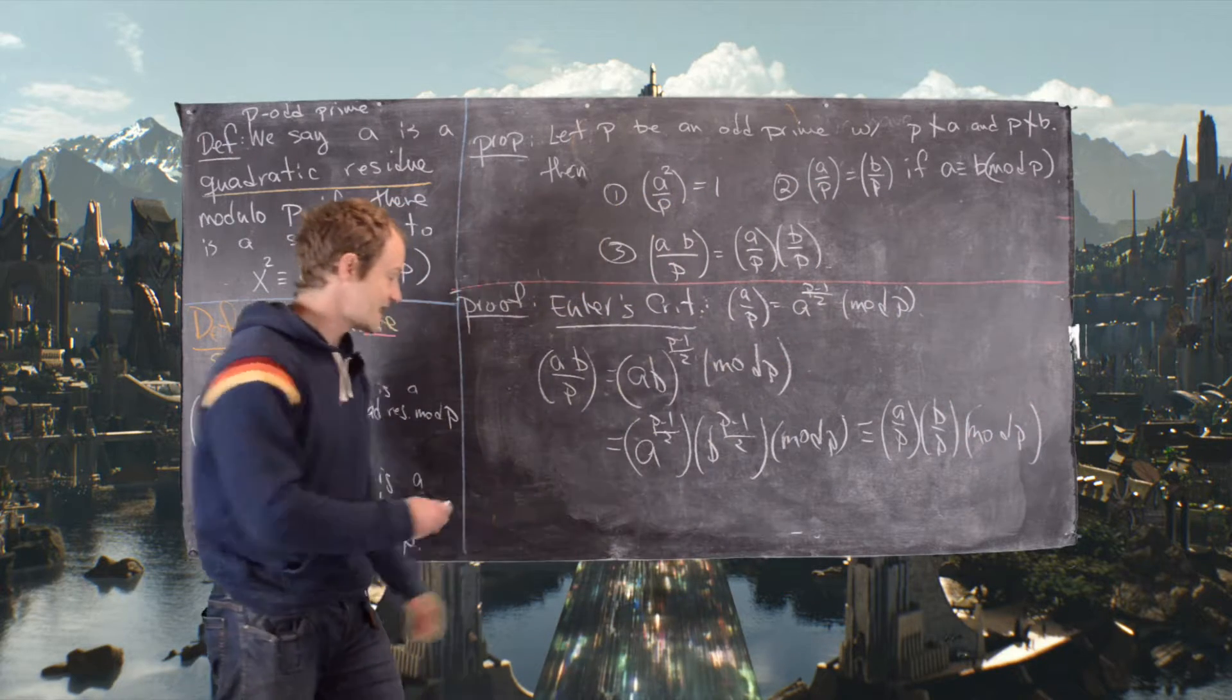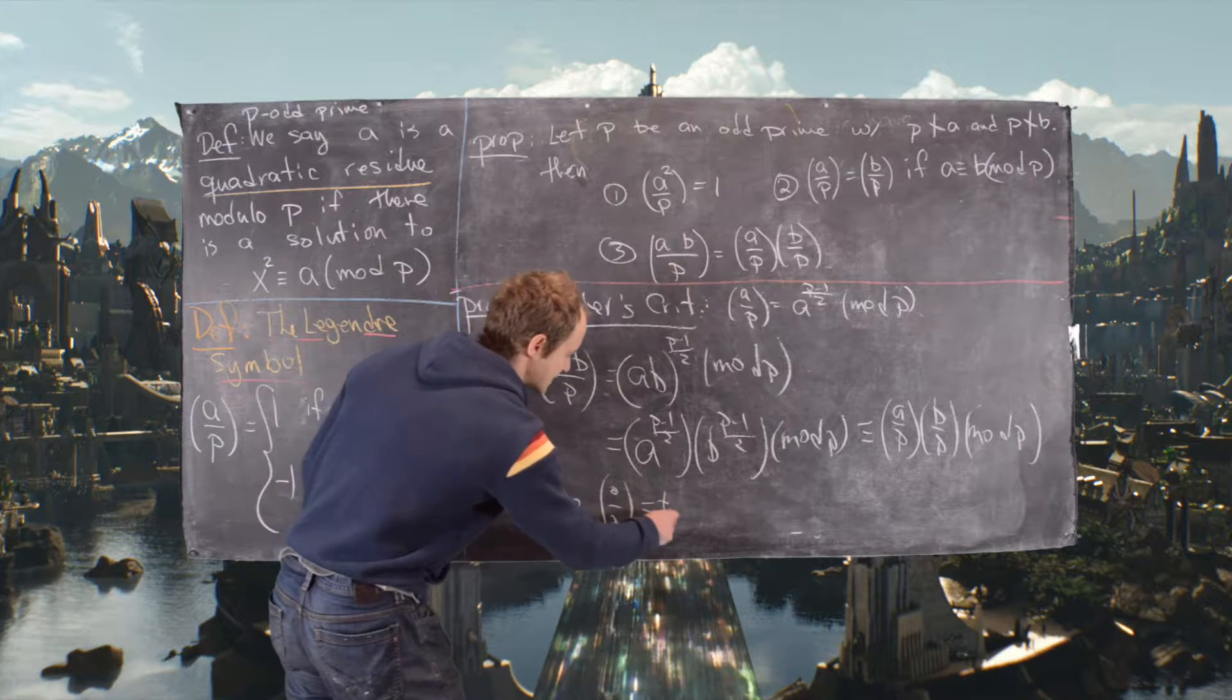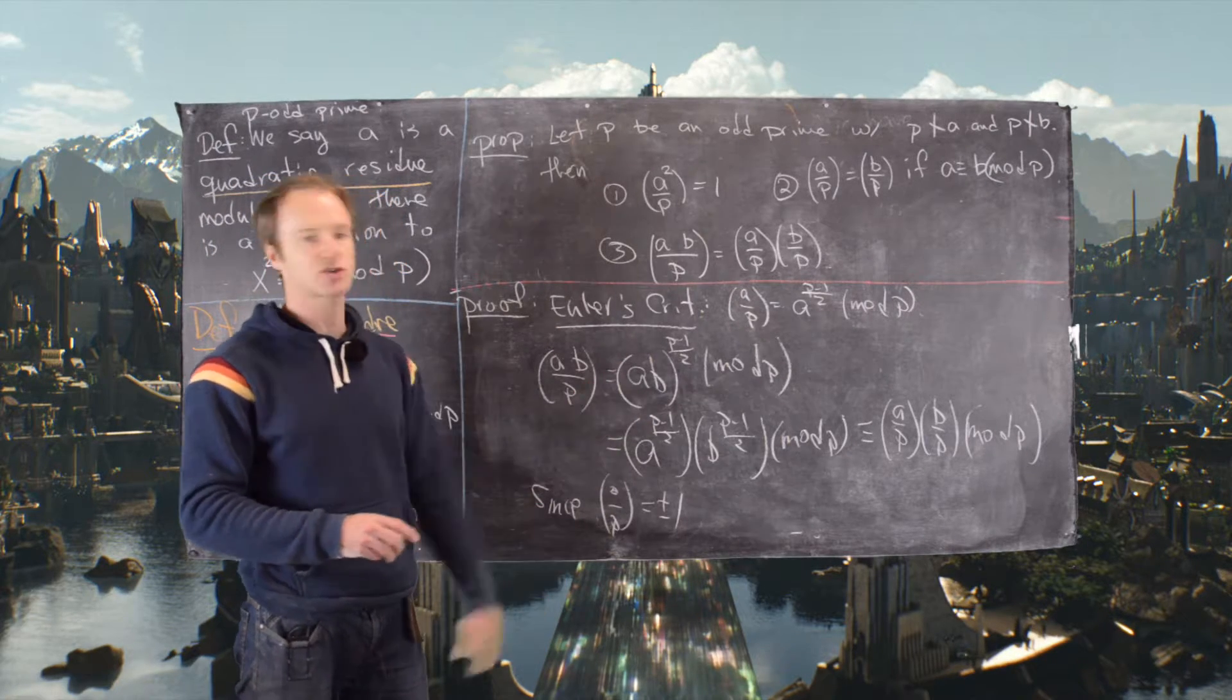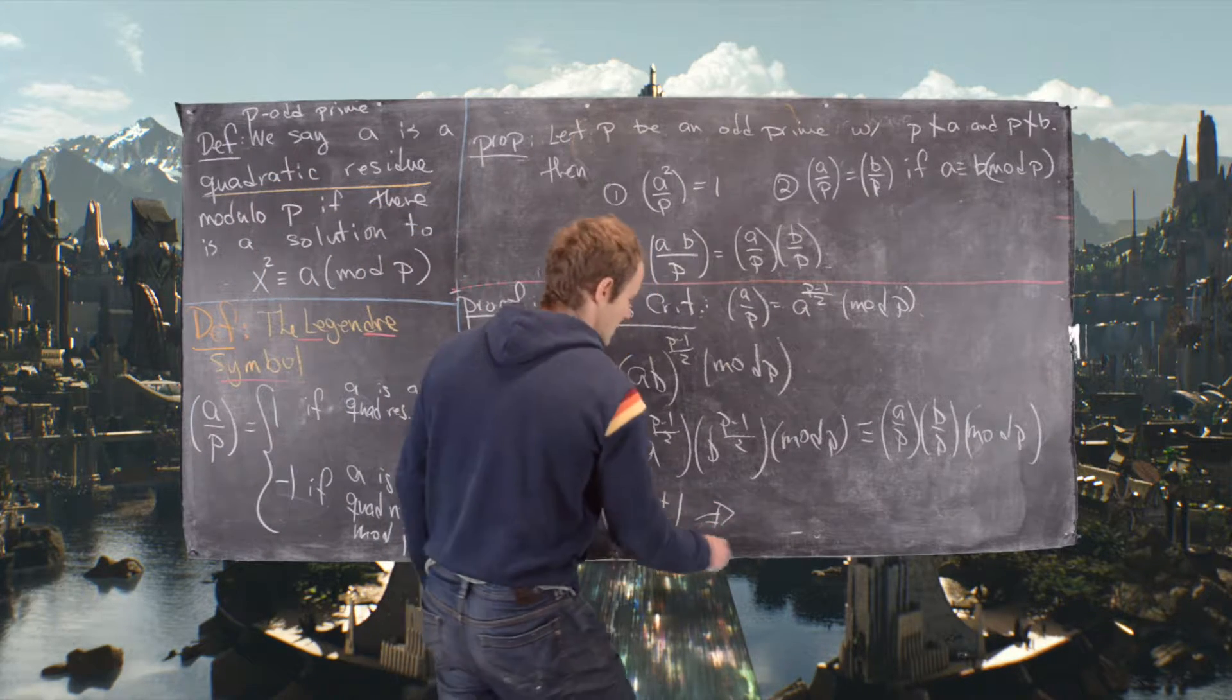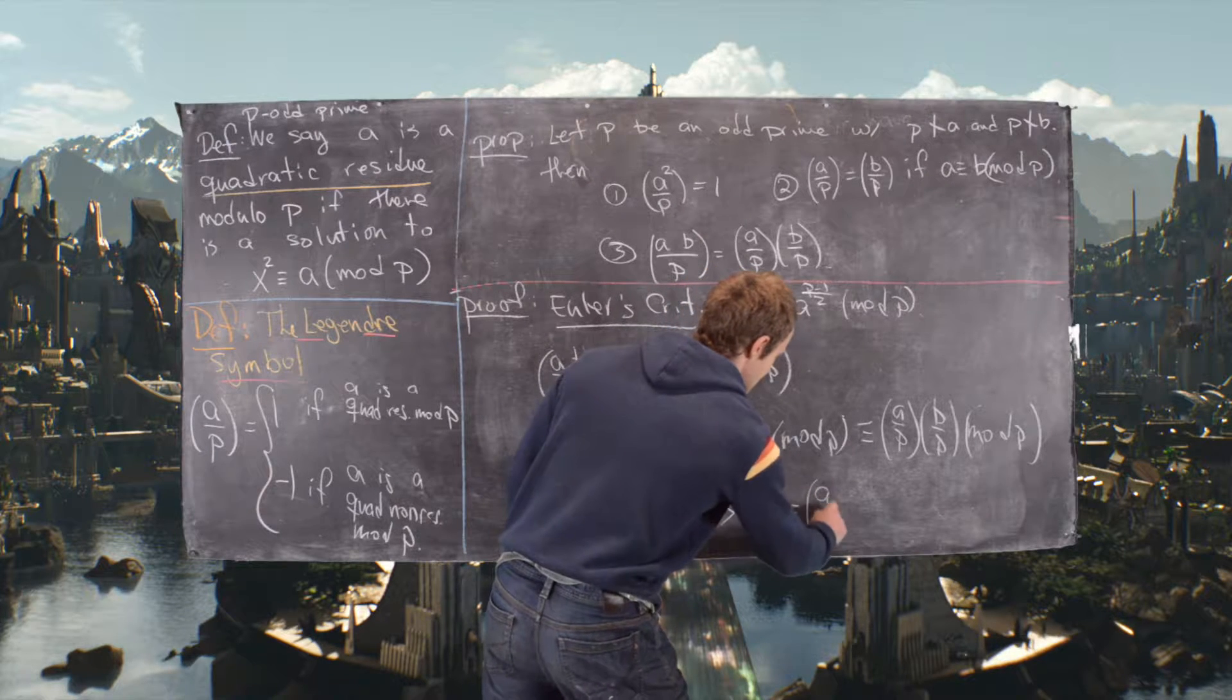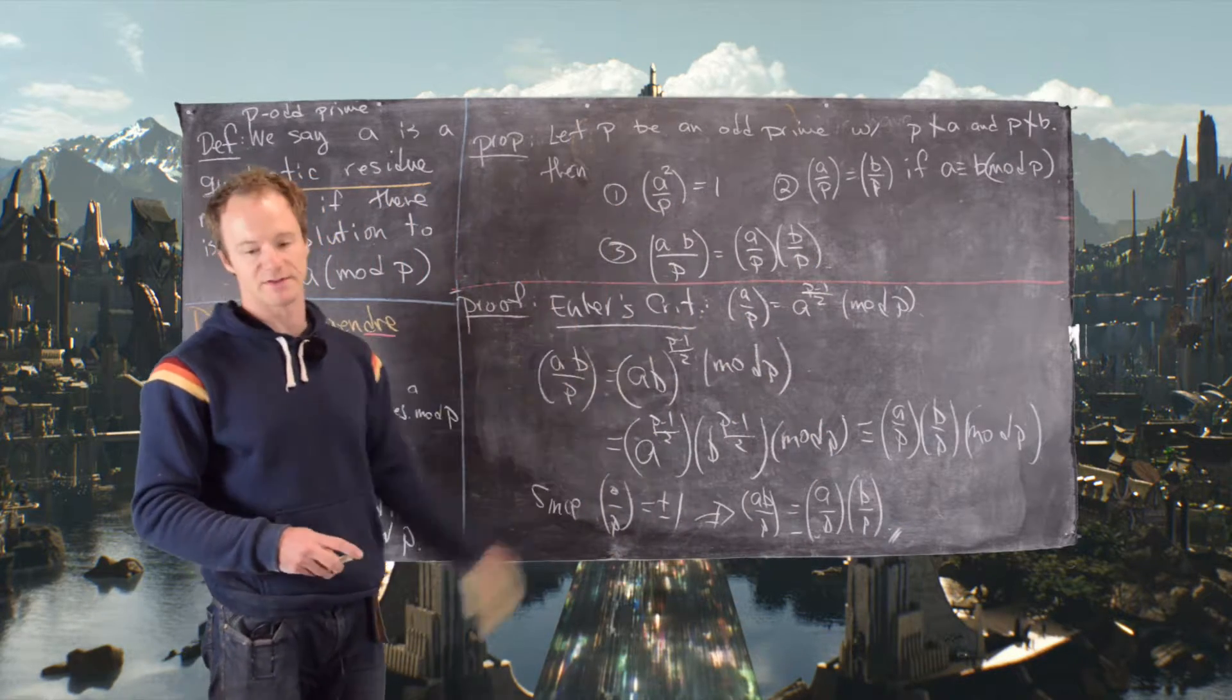But then since the Legendre symbol, we'll just call it dot by p, is equal to plus or minus 1, this means this is not just an equivalence, this is an actual equality. So we can replace this congruence mod p with just equality. That means we can say a b by p is the same thing as a p b p. And that finishes the proof of this proposition.